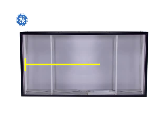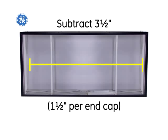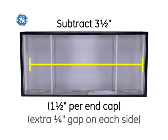Measure the Tetra Powerstrip DS tube for the appropriate length. Subtract three and a half inches, that's an inch and a half per end cap, and an extra quarter inch gap on each side to allow for expansion of the tubes.